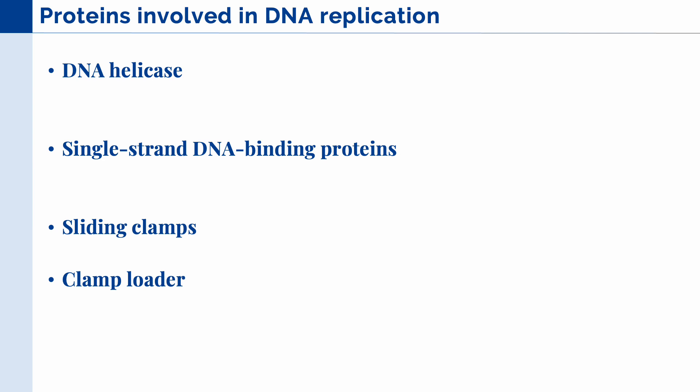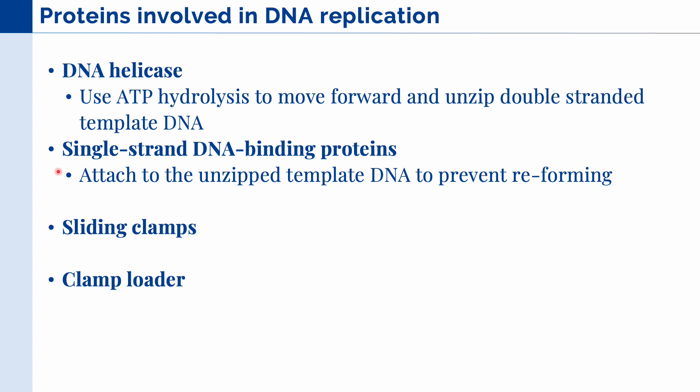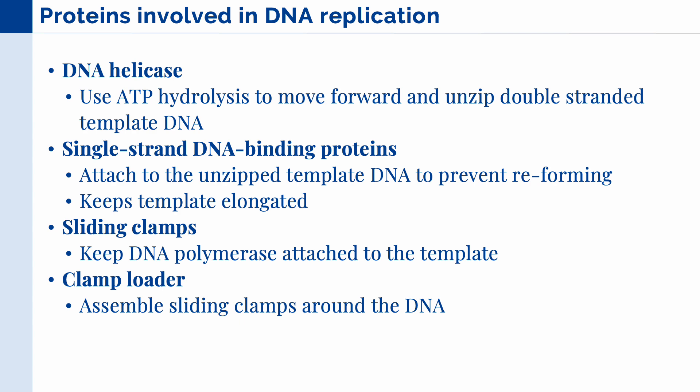Other proteins involved in DNA replication include DNA helicase, which uses ATP hydrolysis to move forward and unzip the double-stranded template DNA. It starts at the replication origins and is responsible for progressing the replication fork. Next, single-stranded DNA binding proteins attach to the unzipped template DNA to prevent it from reforming, keeping the template elongated and separated. We also have sliding clamps, which keep DNA polymerase attached to the template, and finally the clamp loader, which assembles the sliding clamps around the DNA.